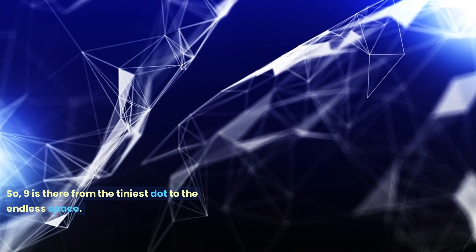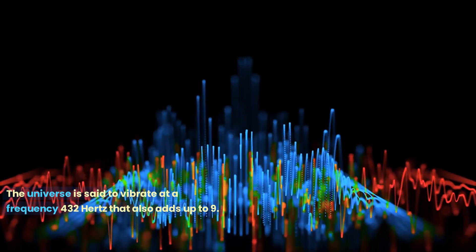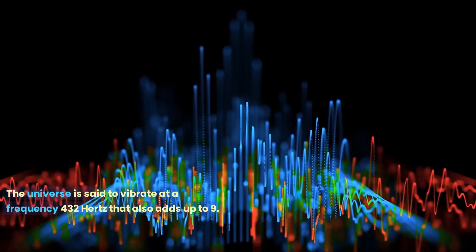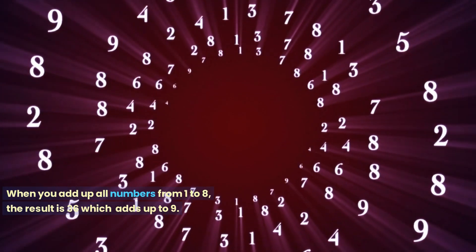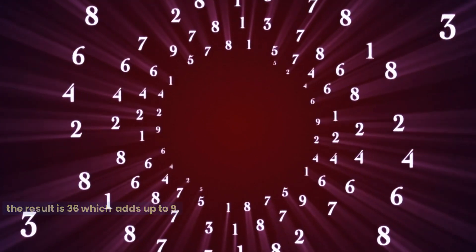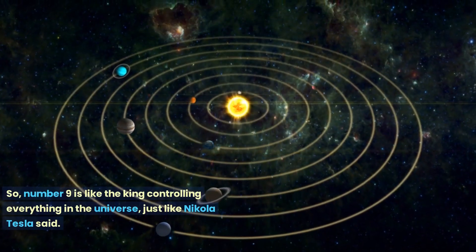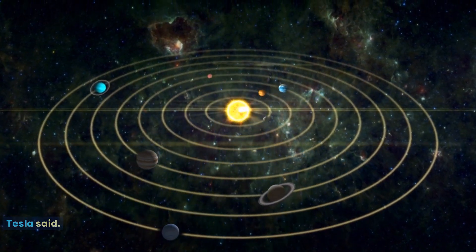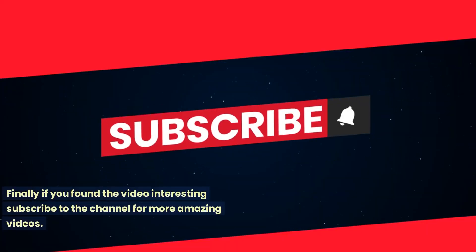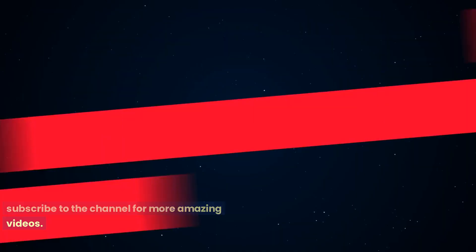So, 9 is there from the tiniest dot to the endless space. The universe is said to vibrate at a frequency 432 hertz that also adds up to 9. When you add up all numbers from 1 to 8, the result is 36 which adds up to 9. So, number 9 is like the king controlling everything in the universe, just like Nikola Tesla said. Finally if you found the video interesting subscribe to the channel for more amazing videos.